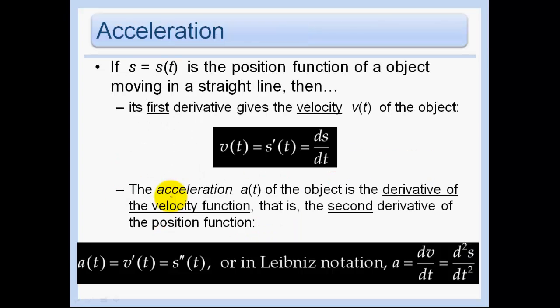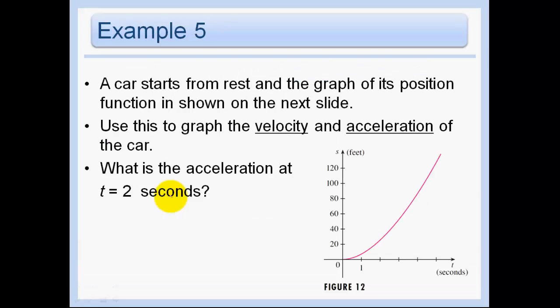When we talk about position, velocity, acceleration: if s of t is a position function, its first derivative gives us the velocity and the second derivative gives us the acceleration. A car starts from rest and the graph of its position function is shown here. Use this to graph the velocity and acceleration of the car, which we're going to do in the next slide. And what is the acceleration at t equals 2 seconds?